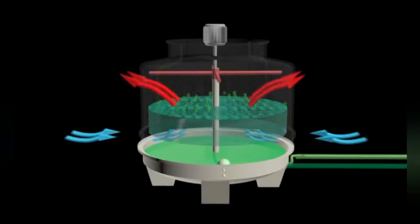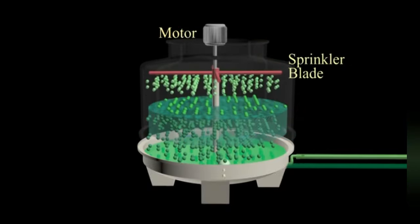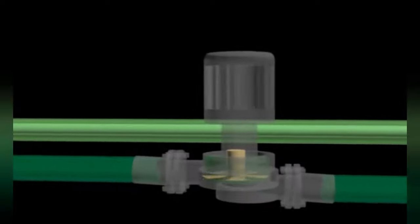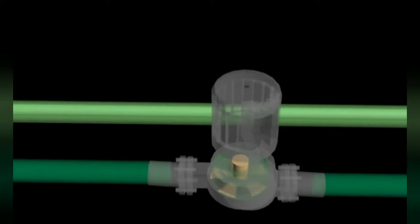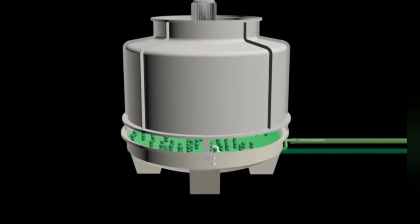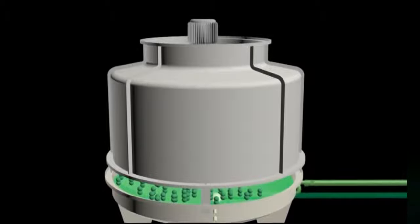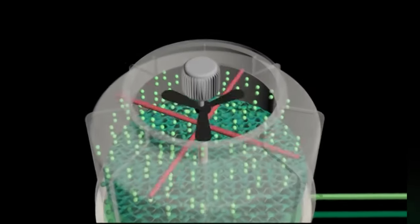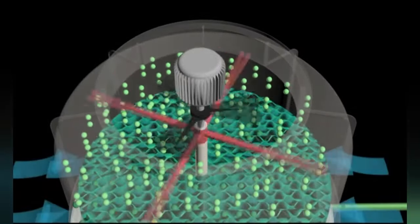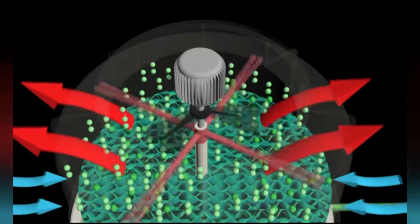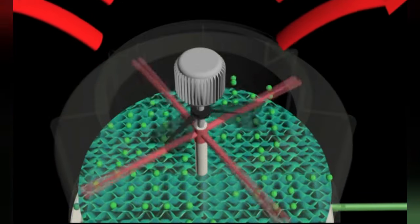The cooling tower consists of several components: motor, sprinkler blades, water fins, water reservoir, buoys, and a make-up water tank. Condenser water flows to the cooling tower with the help of centrifugal pumps, referred to as condenser water return. This water passes through rotating sprinkler blades driven by the water pressure itself. Water then cascades down through the fins, which slow the descent so that heat can be absorbed more effectively by the surrounding air passing through the fins.